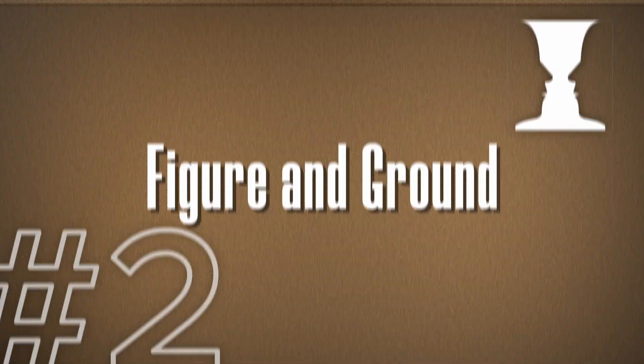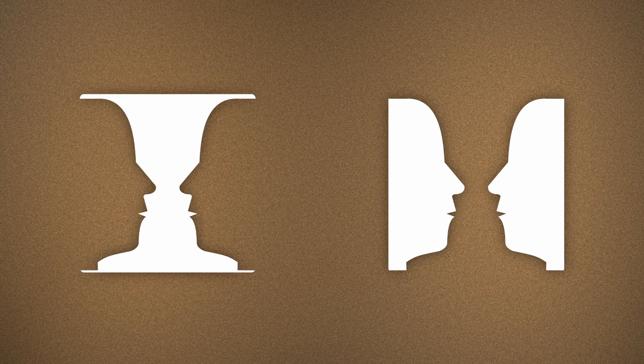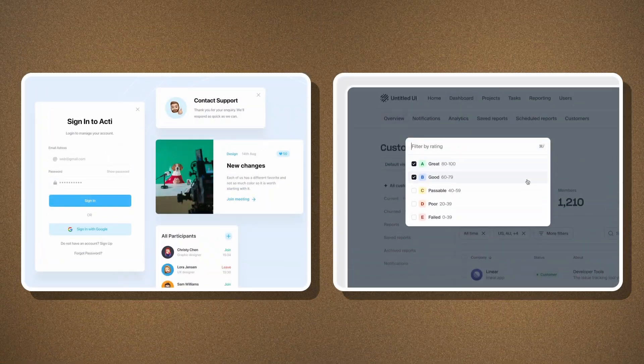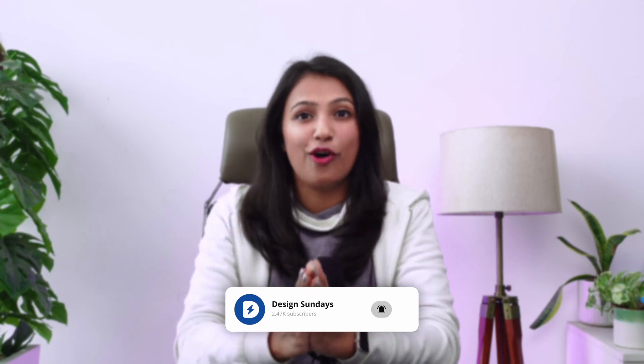Since we're talking about making things stand out, the next one is my favorite law — figure and ground. Tell me what do you see in this image? Do you see two people or do you see a vase? Our mind can very easily distinguish between what is an object versus what is a background, and this concept can be beautifully executed throughout our design. The design and product industry is heavily dependent on pop-ups because they immediately draw users' attention to that one area of the screen.